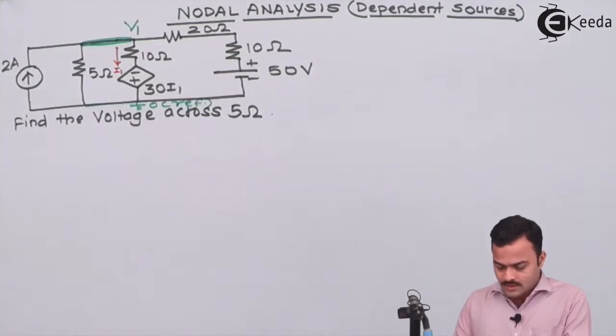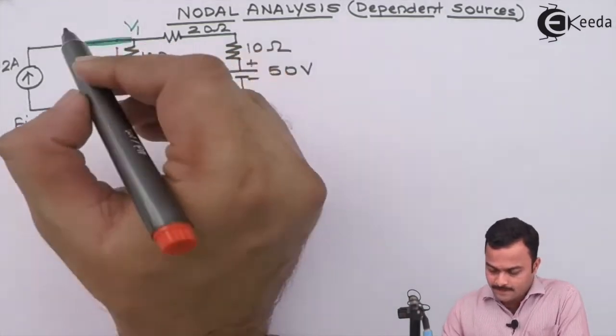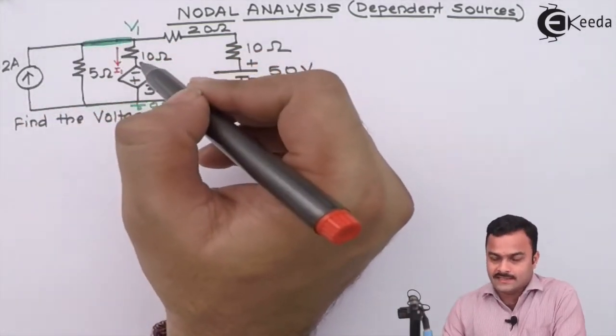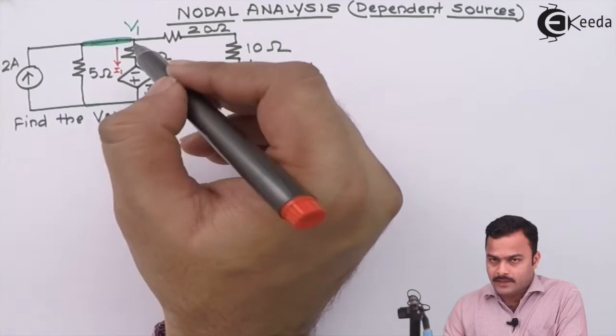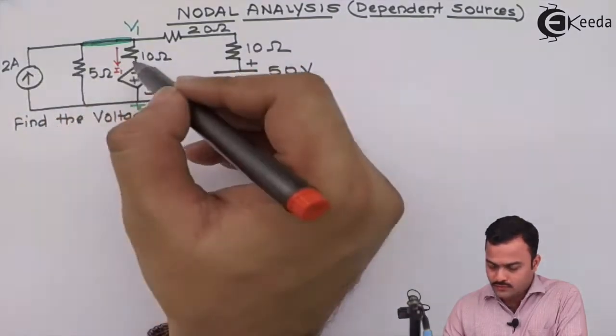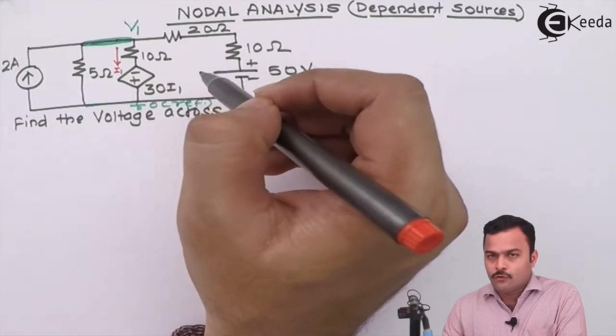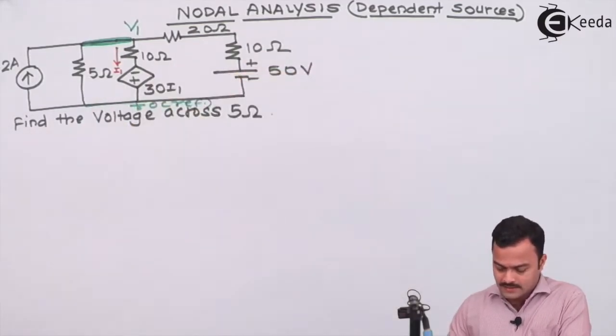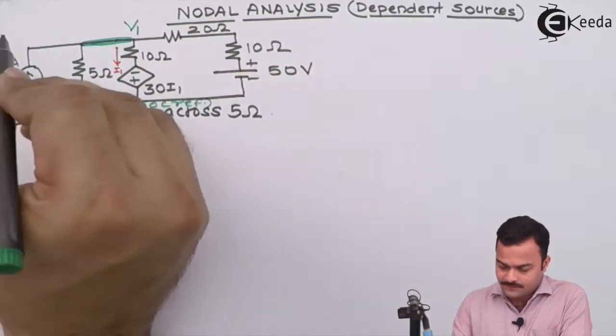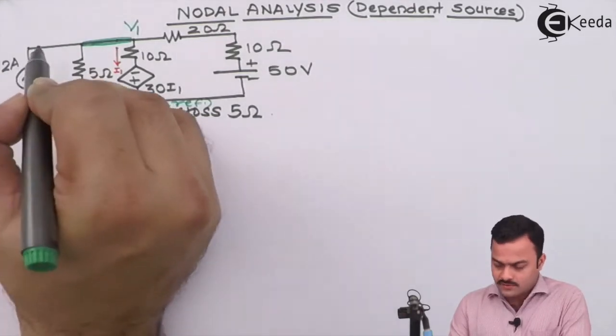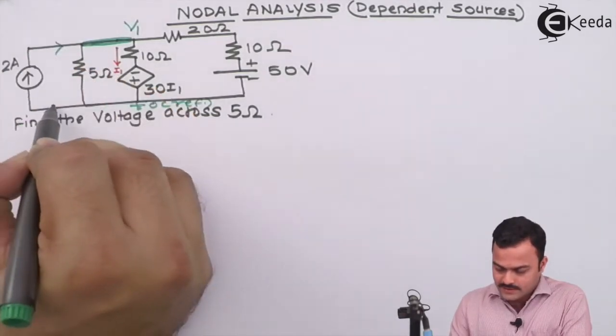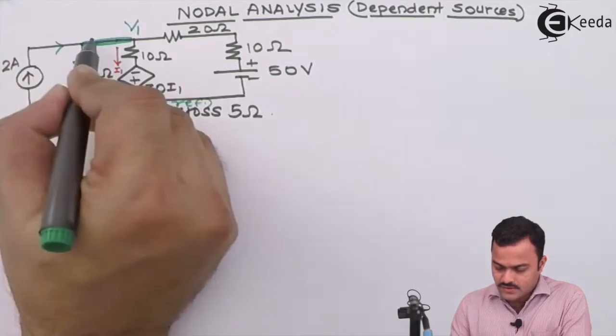Now it is very simple. We will have only one equation and one unknown. Since we have only one node present in the circuit, whatever branches are there in the circuit, all the branches are meeting to that node. I can consider four branches are there. Let's mark all branch currents.